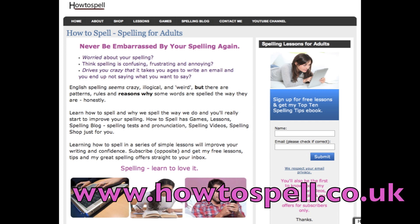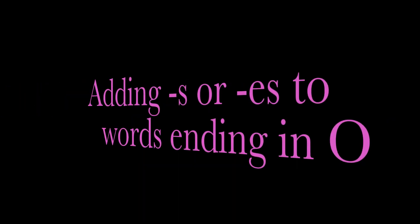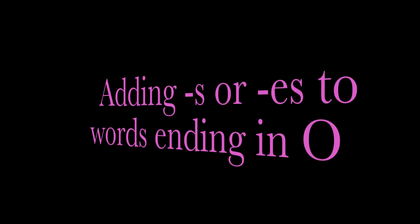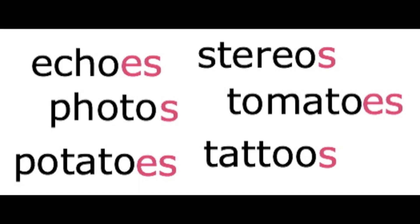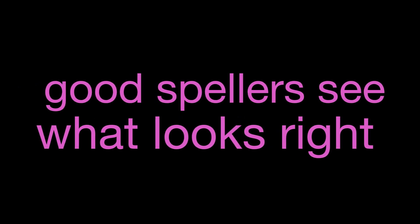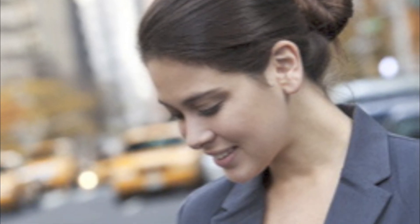Hi there, this is Joanne Rodling from howtospell.co.uk and in this video we're looking at whether to add a plural S or ES to words ending in O. With some words we add S, some we add ES and some we can add both. We're going to look at some rules around this, but before we do I just want to say that good spellers usually see what looks right. You need to develop this because the rules are a bit weird and like all spelling rules there are loads of exceptions.